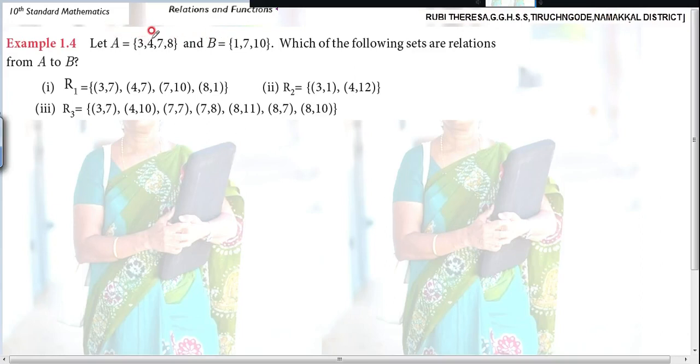Let A equal to 3, 4, 7, 8 and B equal to 1, 7, 10. Which of the following sets are relations from A to B? Relations is a subset of a Cartesian product. Isn't it?